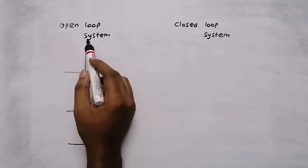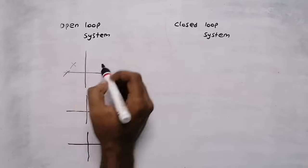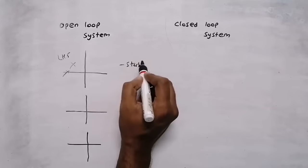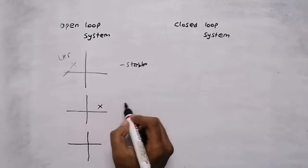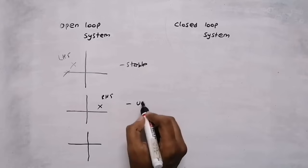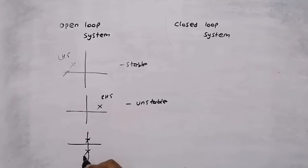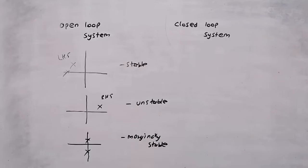How can we determine the stability of an open loop system? If poles are on the left hand side, the system will be stable. If at least one pole is on the right hand side, the system will be unstable. If poles are on the imaginary axis, the system will be marginally stable. Those are the three cases in an open loop system.